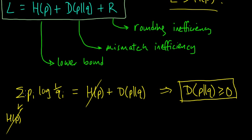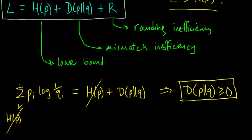When we were doing that minimization, we were minimizing the sum of P_i log 1 over Q_i subject to the constraint that the Q's had to sum to one. Since any positive numbers that sum to one form a probability distribution, what we were minimizing was this quantity over all probability distributions Q_i.